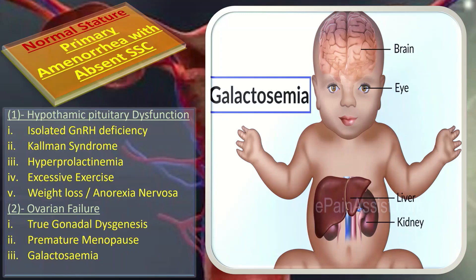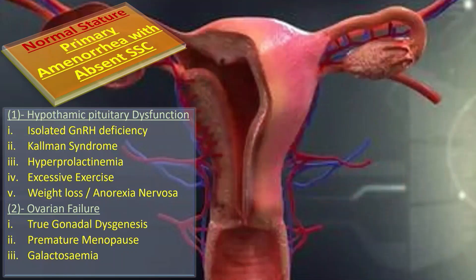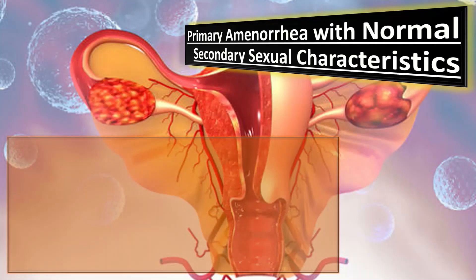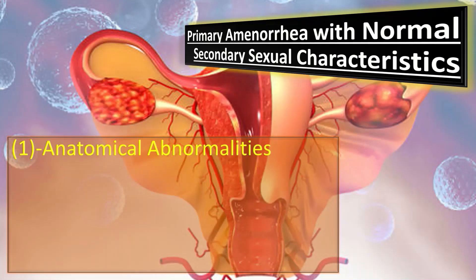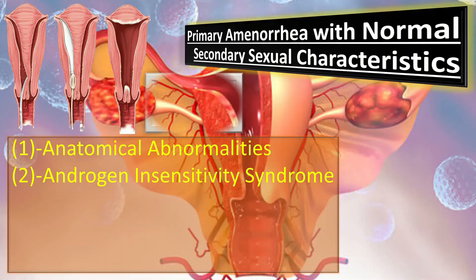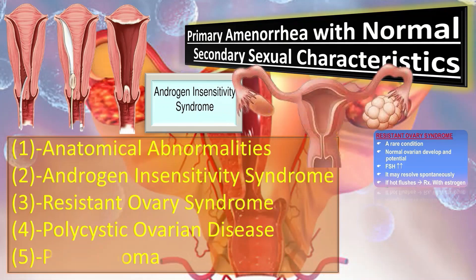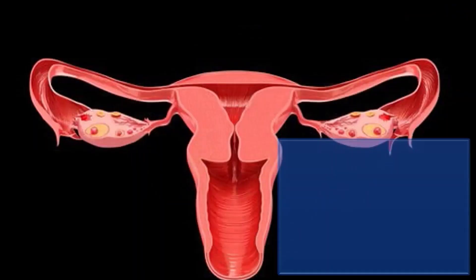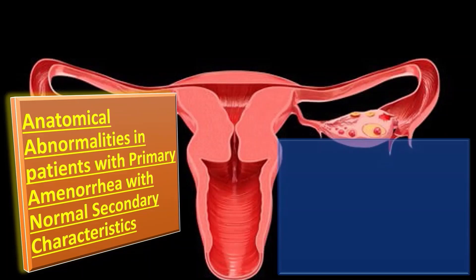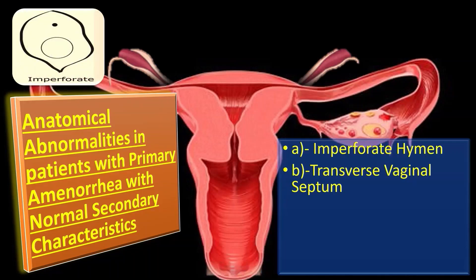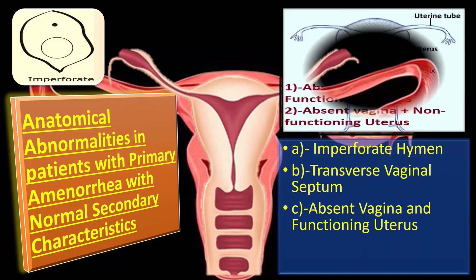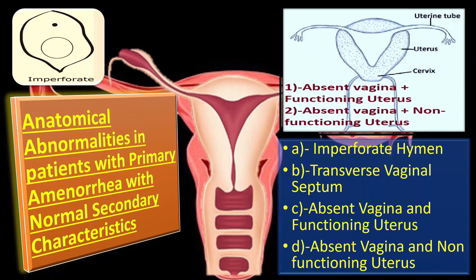Now we discuss primary amenorrhea with normal secondary sexual characteristics. That includes anatomical abnormalities, androgen insensitivity syndrome, resistant ovary syndrome, polycystic ovarian disease, and prolactinoma. The anatomical abnormalities suspected include imperforate hymen, transverse vaginal septum, absent vagina with functioning uterus, and absent vagina with non-functioning uterus.